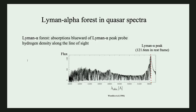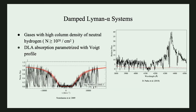Let me quickly introduce what the Lyman-Alpha Forest is. The Lyman-Alpha Forest consists of absorption lines in the quasar spectra caused by Lyman-Alpha transitions from neutral hydrogen along the line of sight. Here is an example of the Lyman-Alpha Forest in the quasar spectra. In the Lyman-Alpha Forest, there are some very strong absorption regions caused by neutral hydrogen with very high column densities, usually larger than 10^20.2, and those are called DLAs.